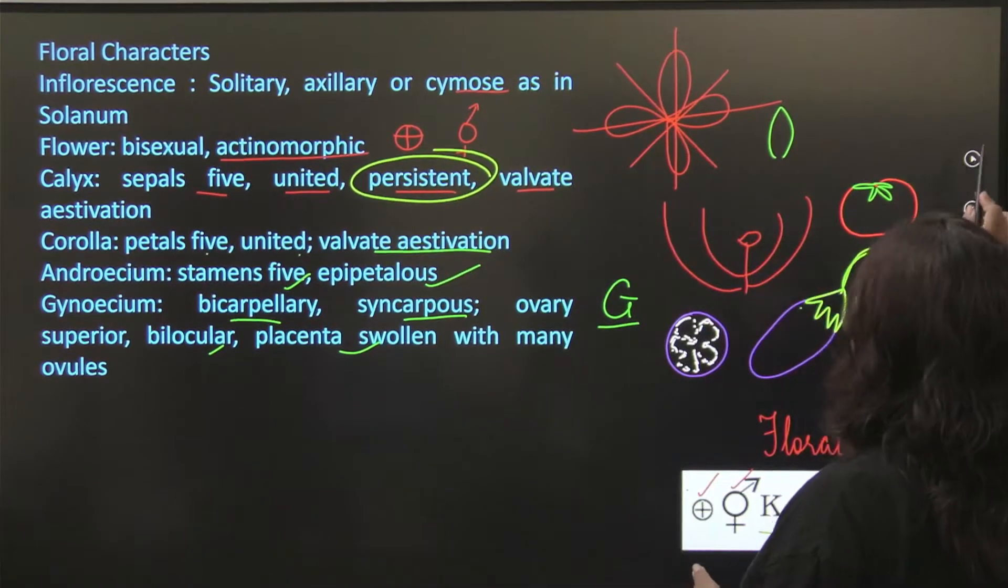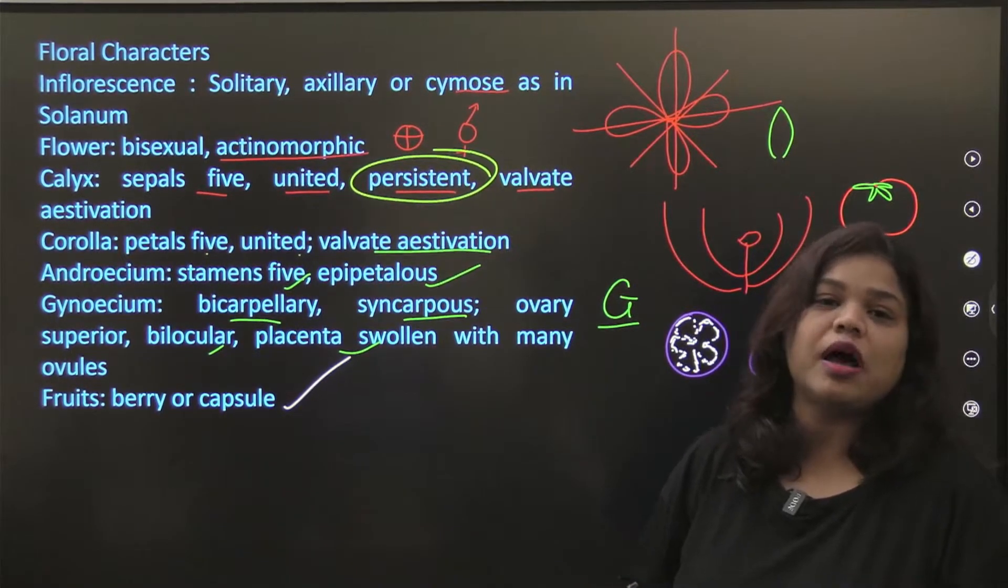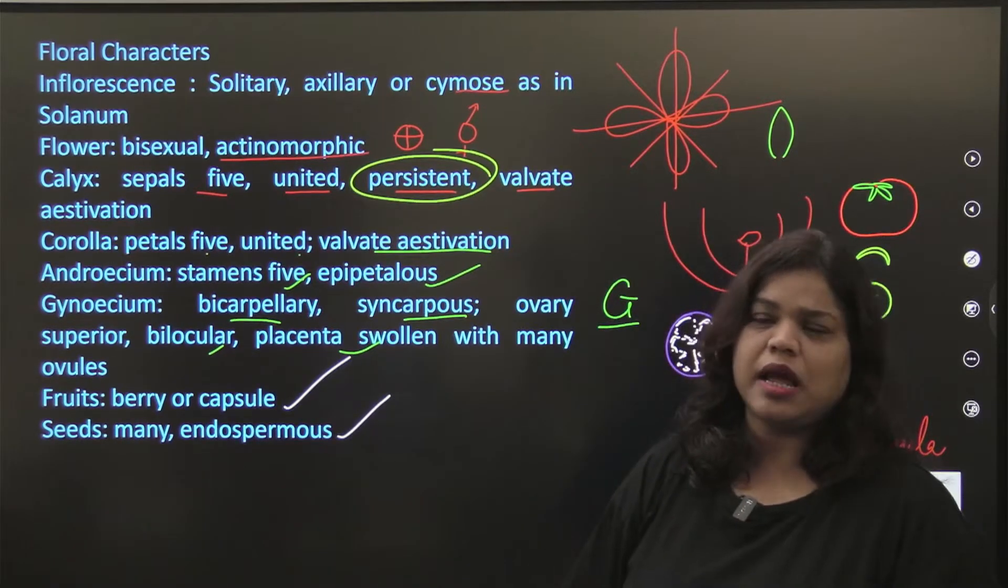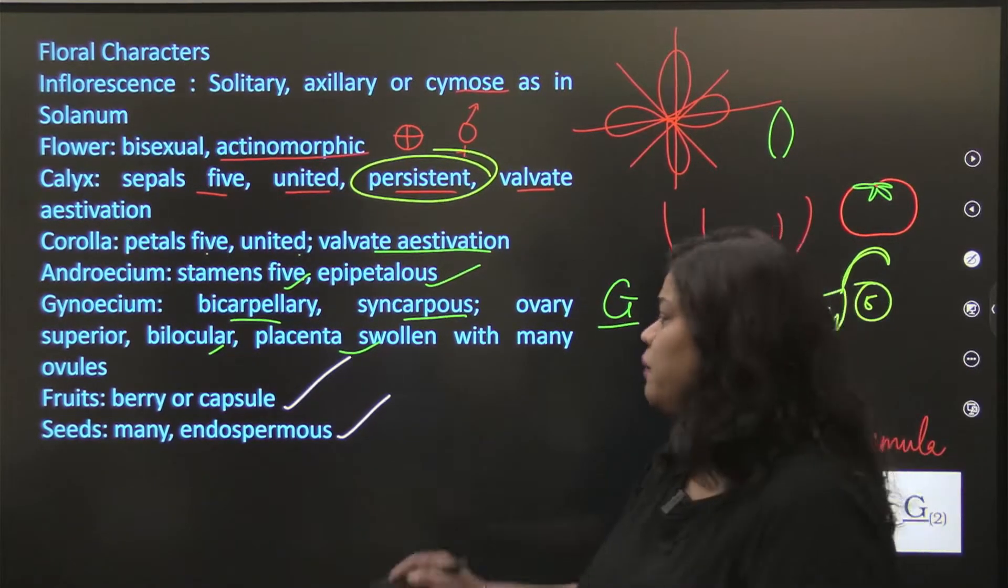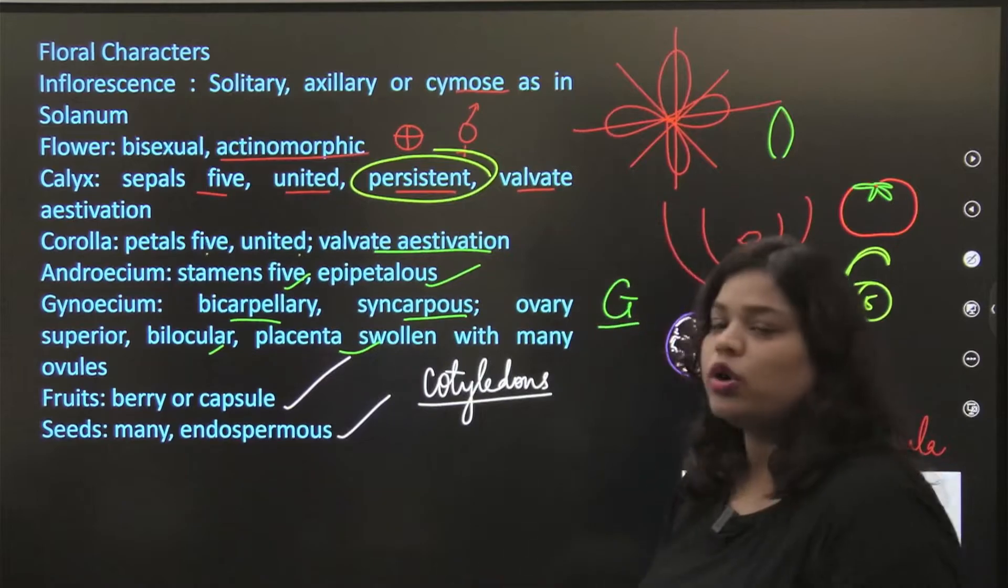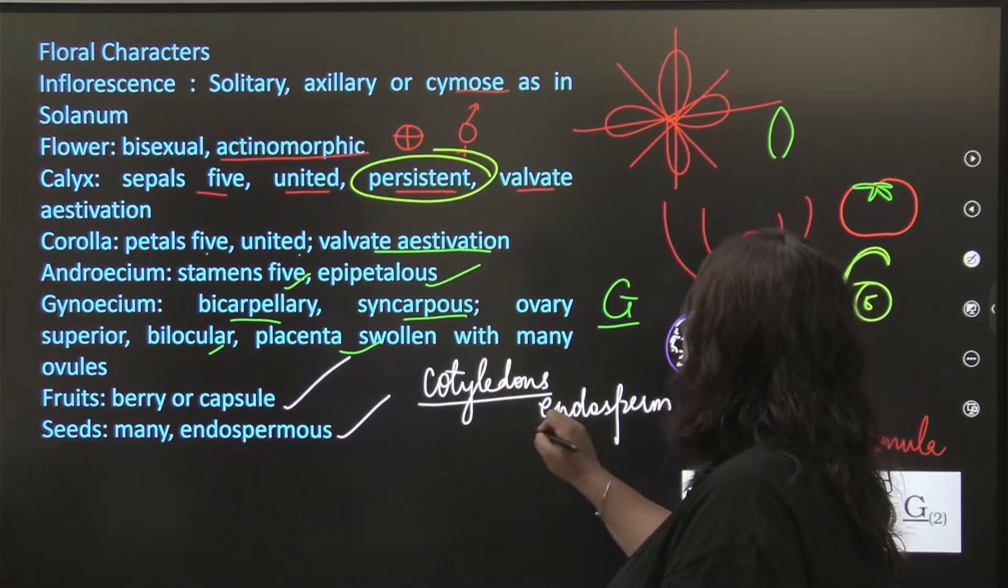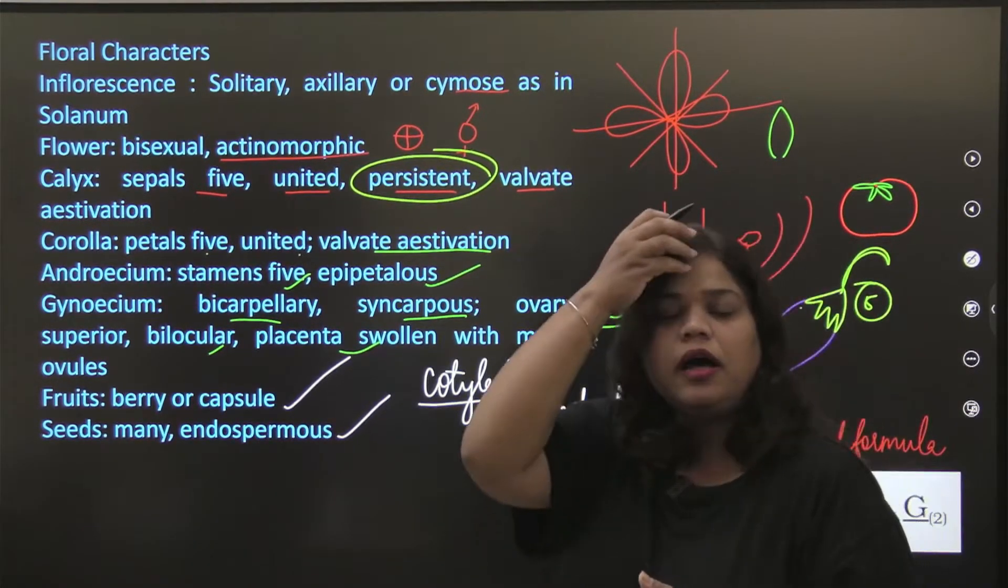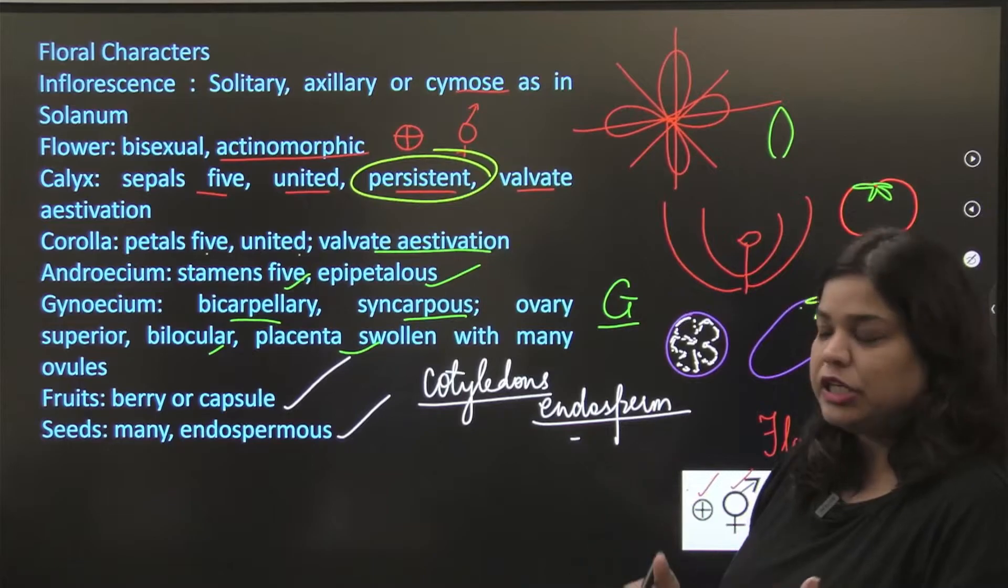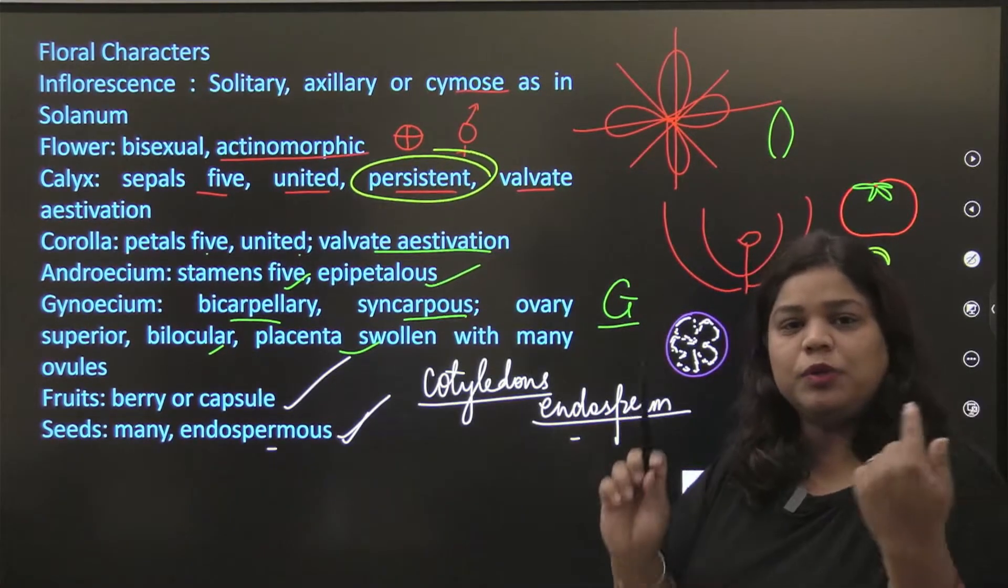Fruits berry or capsule. So berry fruits or capsules. Seeds many, endospermous. Now when you understand, when you talk about endospermous, that means your cotyledons, they are not storing food. What is storing food? It is your endosperm. We have seen in the maize, in the monocot seed. In the maize, that is actually storing your food for germination. So there are seeds, a number of seeds are there, and they are all endospermous. Embryo, radicle, plumule, shoot.